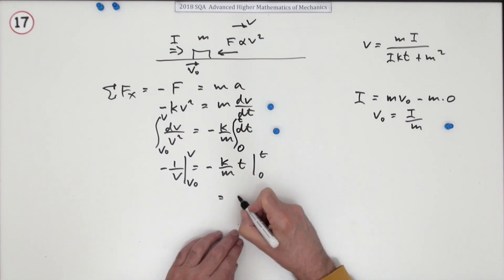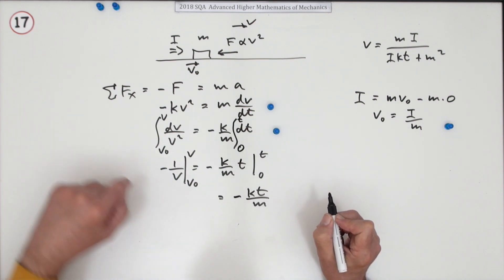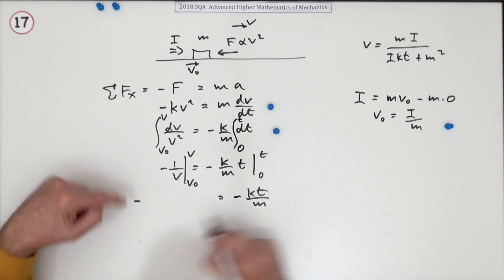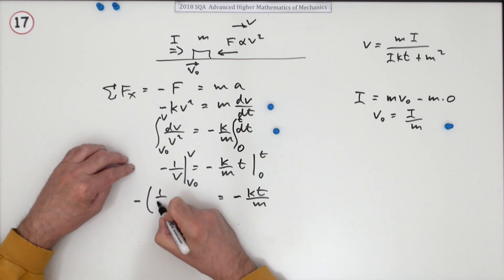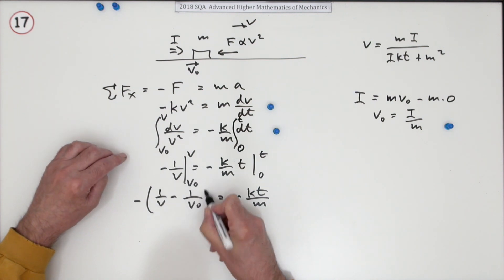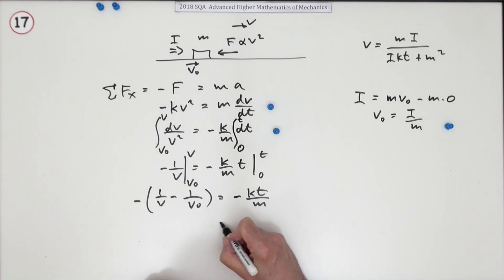So this side's easy, that'll just be negative K T upon M. This side though, is going to be, I'll just take the negative out of it. Now the negatives can disappear, of 1 upon V minus 1 upon V0. Maybe in the next line I'll just knock out those negatives.